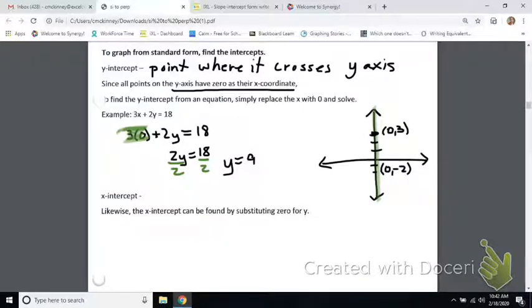So, for the x-intercept, the x-intercept is where it crosses the x-axis, and that's this line. That's my horizontal axis. So, any place on the horizontal axis, all of those points would have a number for x, but a zero for the y.